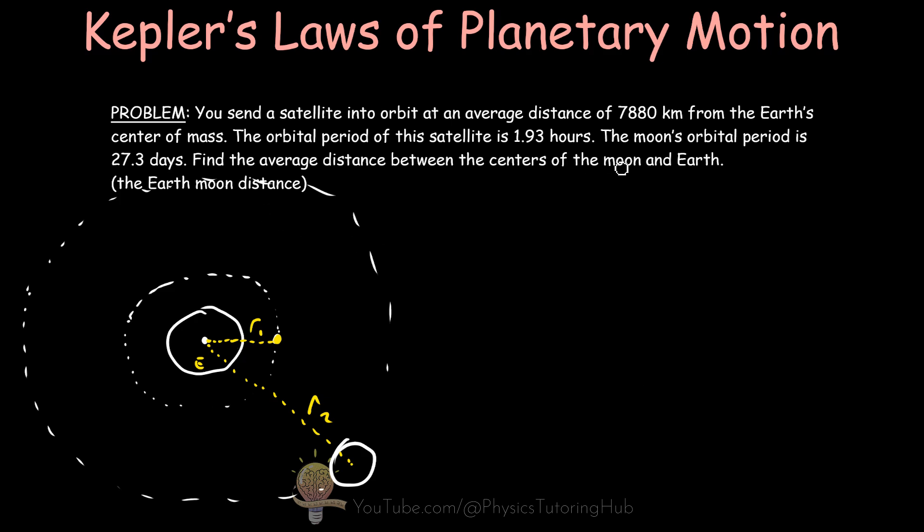We already know the periods of both the satellite and the Moon. So the period of the satellite is T1, which equals 1.93 hours. And the orbital period of the Moon, T2, is equal to 27.3 days, which is 27.3 times 24 hours.